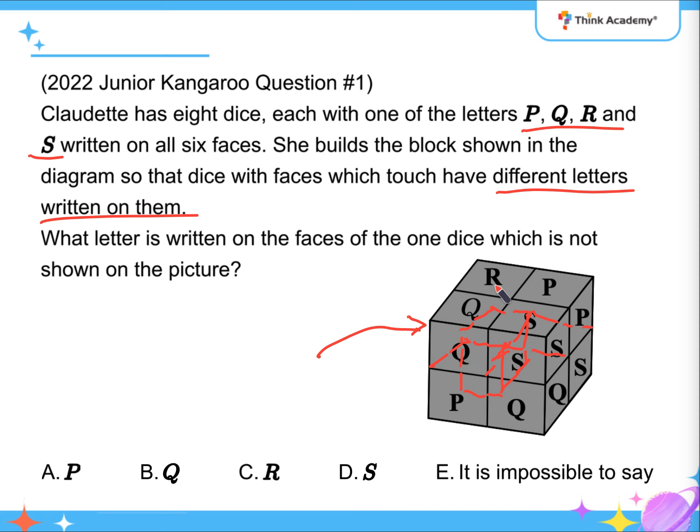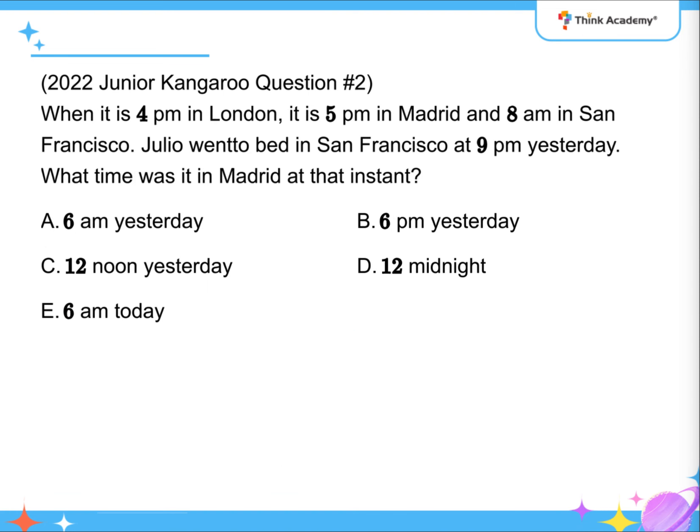So, it means that it's beneath R, to the inside of P, and to the inside of S, so it can't be R, P, or S. That's why it has to be Q. That's how we do the first question.